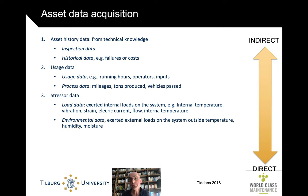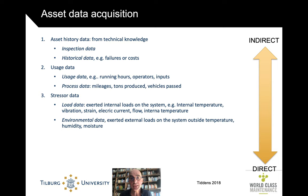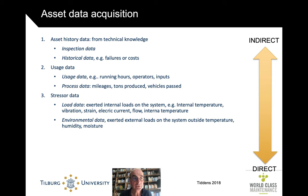More specific is stressor data — things that actually create a load on the system. That includes both the actual load and the environment in which the asset was operating. Load data include temperature, tide, vibration, strain, current, and internal flows. External environmental data covers things like humidity and moisture, which can create corrosion — also a form of degradation.